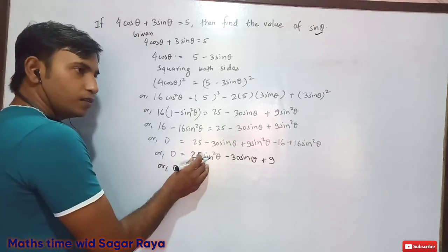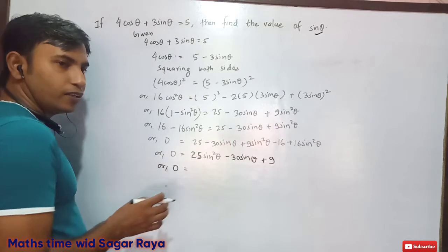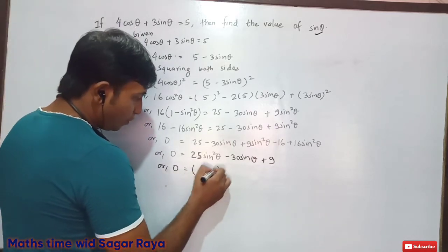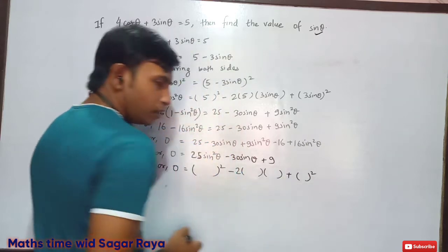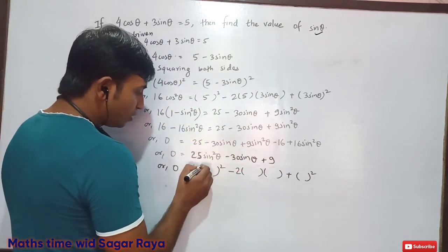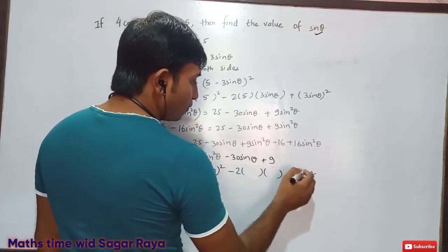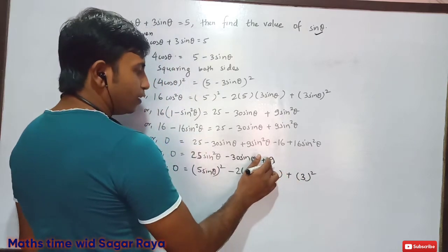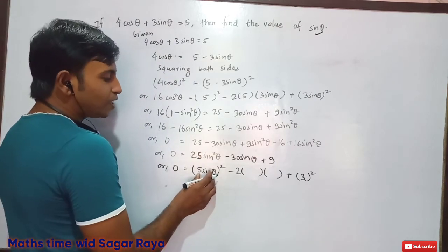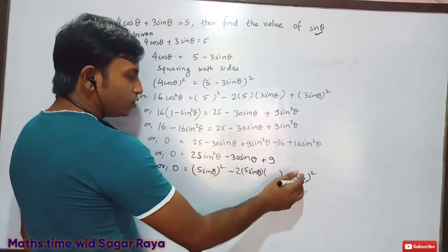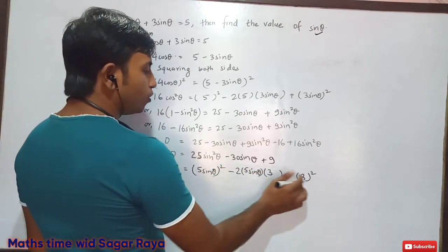Notice that 25 is the square of 5, and 9 is the square of 3, so we can write this in the form a² − 2ab + b². Let a = 5 sin θ and b = 3. Then a² = (5 sin θ)² = 25 sin²θ, and b² = 9. Let's verify the middle term: 2 × (5 sin θ) × 3 = 30 sin θ — which matches perfectly.